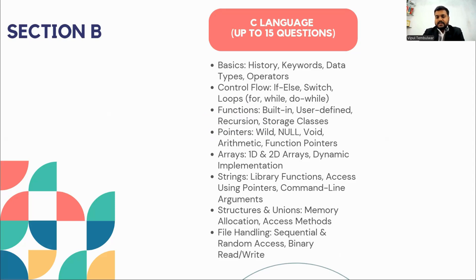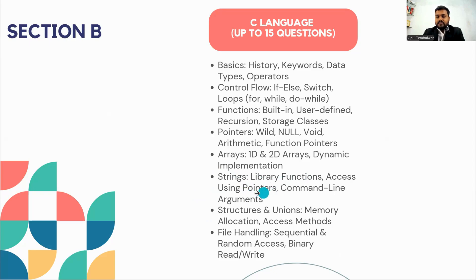The next topics are arrays. In C programming language, we can define 1D and 2D arrays, how memory is allocated to an array, internal memory allocation, and how to access elements from the array. How to access values of a specific array using index and subscript is important. Then strings — a string is a sequence of characters in C. There are predefined functions for strings, and you can access strings using pointers. You can expect questions on how to create and access strings in C.